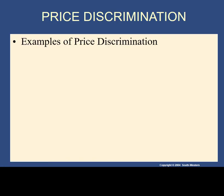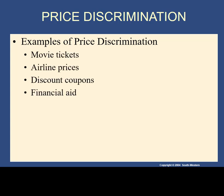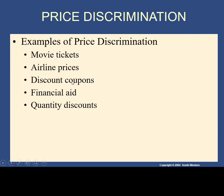In the real world, different prices are charged to different consumers. For movie tickets, you get discounts depending on when you see the movie — matinee prices, kids' prices. Airline tickets vary depending on when you travel. Discount coupons let you pay a different amount than someone without a coupon. In the case of financial aid, some people receive aid and some don't, so different customers pay different amounts for college.